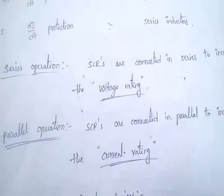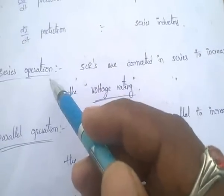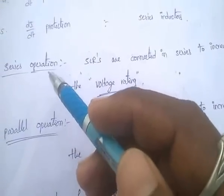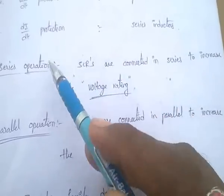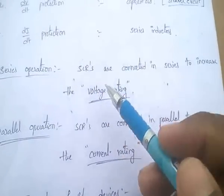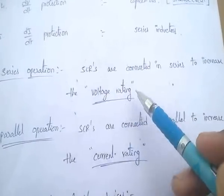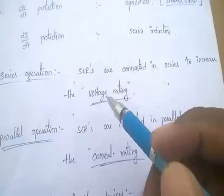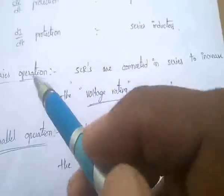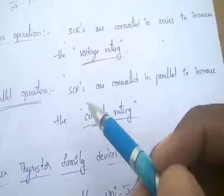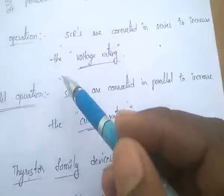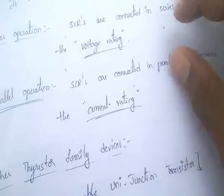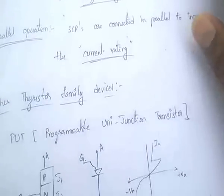Series operation of SCRs: SCRs are connected in series to increase the voltage rating. To increase the current rating, SCRs are connected in parallel.